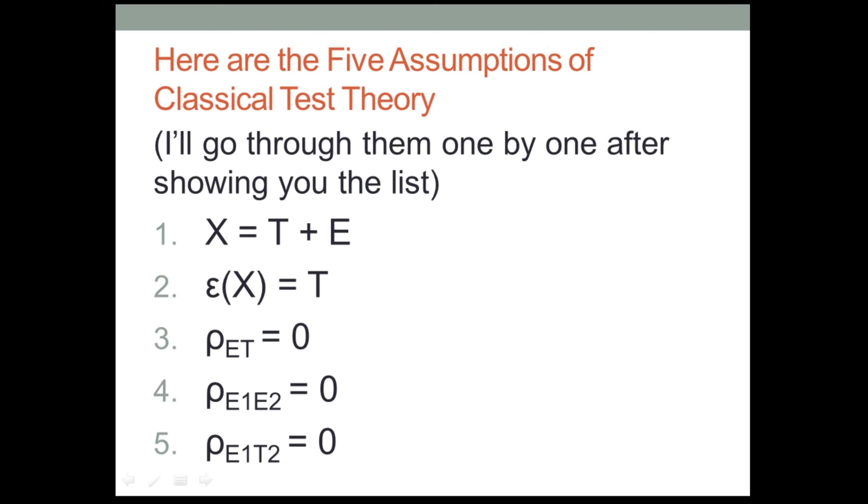They are X equals T plus E. The expected value of X equals T, the true score. Now I'm going to start introducing what these symbols, reminding you what these symbols stand for. Rho, that symbol that looks like a P, rho sub ET, that is the population correlation between error scores and true scores, equals zero. Number four, the population correlation between error scores on one test and on another test, equals zero. And number five, the population correlation between error scores on one test and true scores on another, equals zero.